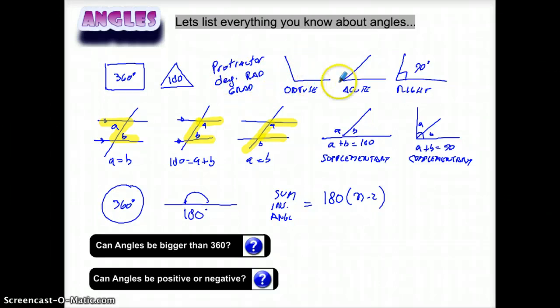Obtuse, if it's greater than 90. Acute, if it's less than 90. It's called a right angle, if it's 90. There's the Z pattern, these two guys are the same. There's the C pattern, these two guys are the same as long as the two lines are horizontal.